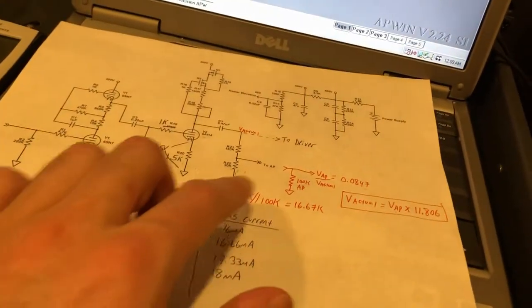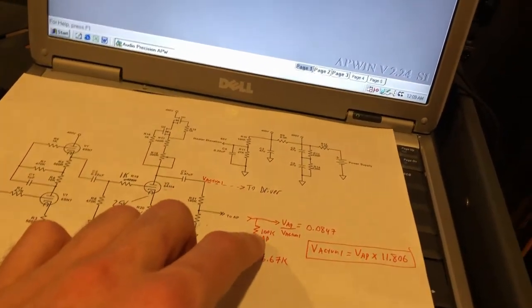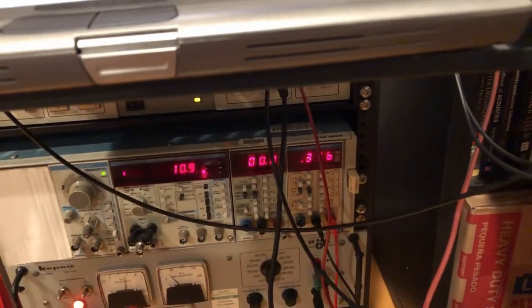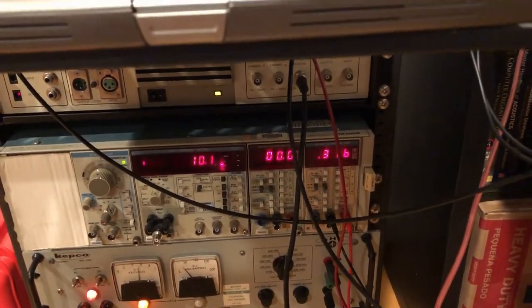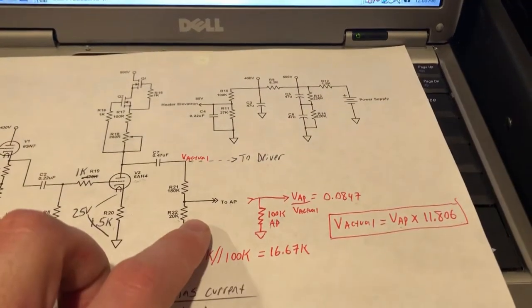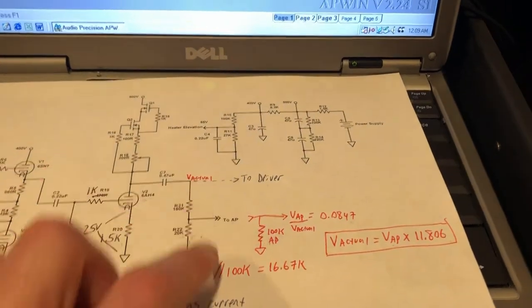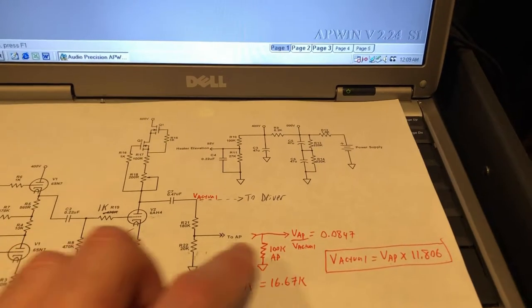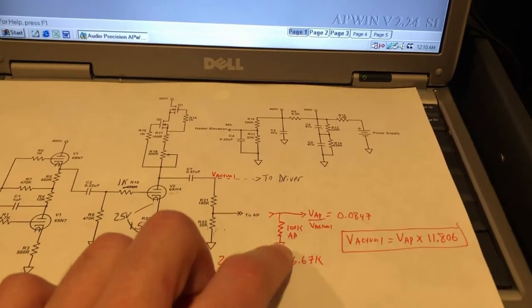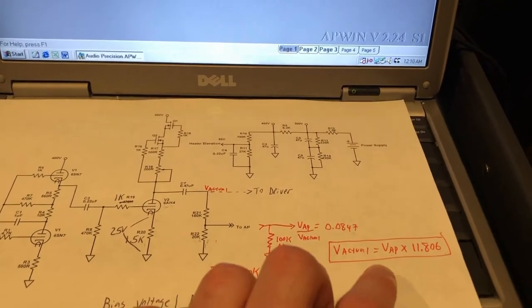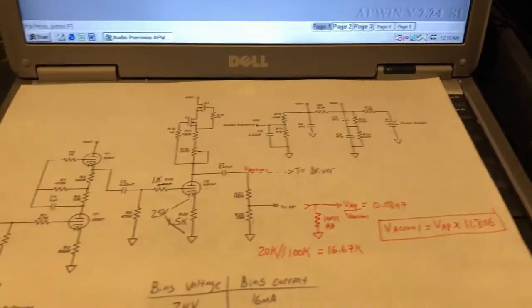So we should have no loading effects if I connect one of those to here. And therefore we should get a perfect 10 to 1 divider per these resistors because the loading of the digital multimeter will be negligible. And then we can compare and see if this calculation for the AP loading is correct.